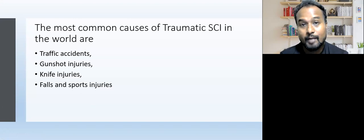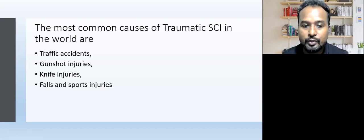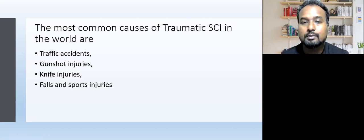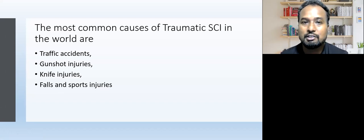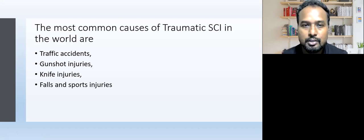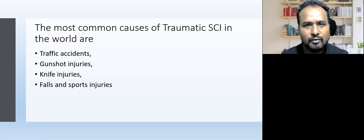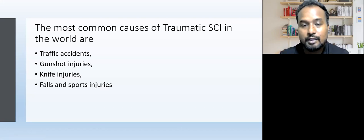The most common causes of traumatic spinal cord injury are traffic accidents, gunshot injuries, knife injuries, falls, and sports injuries. In the Indian context, traffic accidents and falls are the most common causes. Traumatic spinal cord injury is very commonly seen in young adults, that is the age group from 18 to 35, very common because of high-risk behavior and traffic accidents.